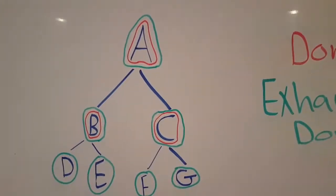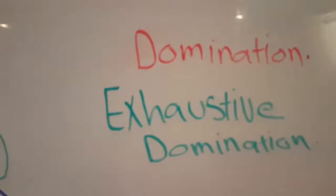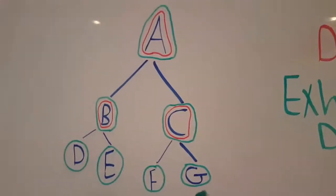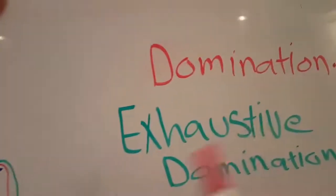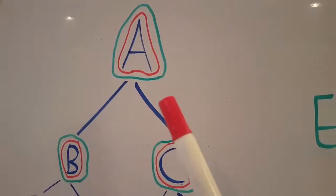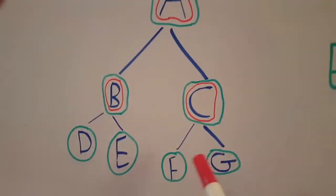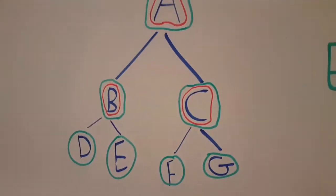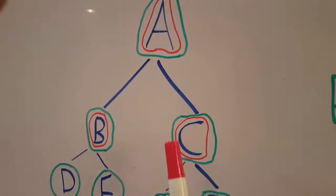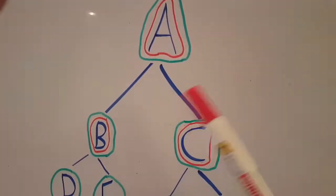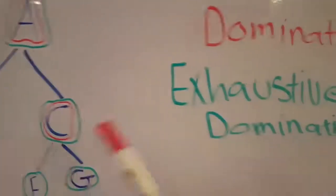I am going to continue with another abstract tree to discuss domination and exhaustive domination. In this abstract tree I have clarified things with circles so you can understand better. By domination I mean that A dominates B and A dominates C. I say this because there is nothing between them — if something went between them, then that intermediate thing would be dominated by A instead.